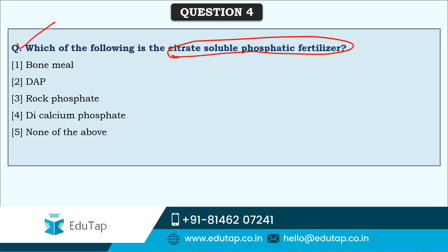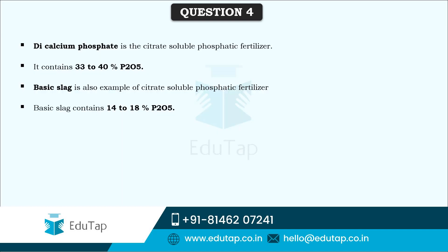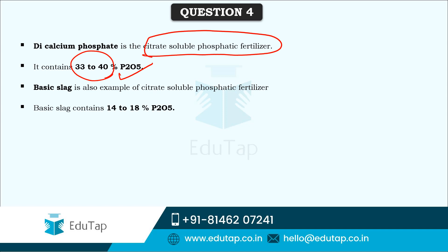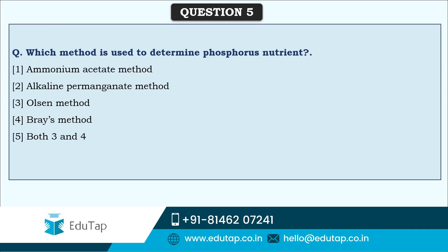The next question asks: which of the following is a citrate-soluble phosphatic fertilizer? The answer is dicalcium phosphate. Dicalcium phosphate is a citrate-soluble phosphatic fertilizer which contains 33 to 40% phosphorus in the form of P2O5. Basic slag is also an example of a citrate-soluble phosphatic fertilizer, and it contains 14 to 18% P2O5.